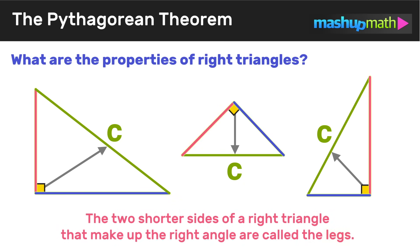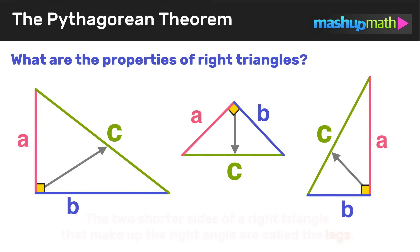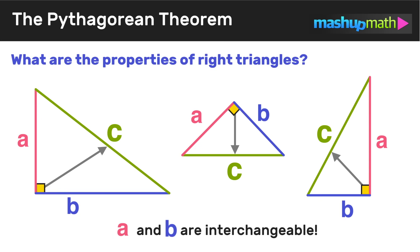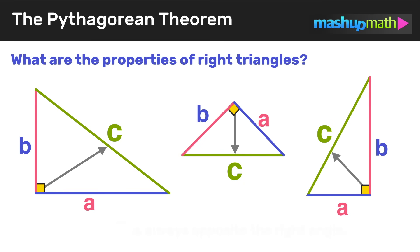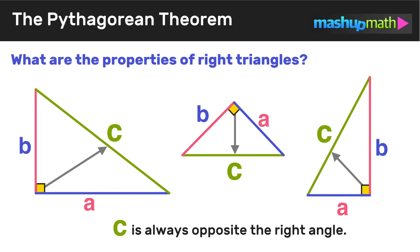Now that you understand how to identify the hypotenuse, let's talk about the two shorter sides of a right triangle. These are called the legs of the right triangle, and we represent their lengths with the letters a and b. One final note: the hypotenuse c will always be directly opposite the right angle, but a and b are interchangeable — it doesn't matter which one you label a and which one you label b, as long as you're only labeling the legs and not the hypotenuse.